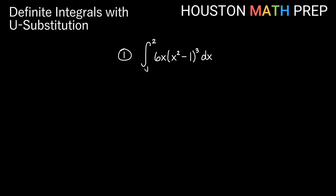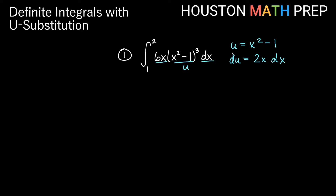Remember these are x-bounds, so when we substitute in terms of u, we'll keep in mind that this was x = 1 and x = 2. I notice I have an x term out here and x squared information, and the derivative of x² is going to be x. So I'll choose u to be everything inside the parentheses: x² − 1, because then du = 2x dx. So 6x dx is just off by a constant multiple — multiplying everything by 3 gives exactly 6x dx, so 3 du = 6x dx.